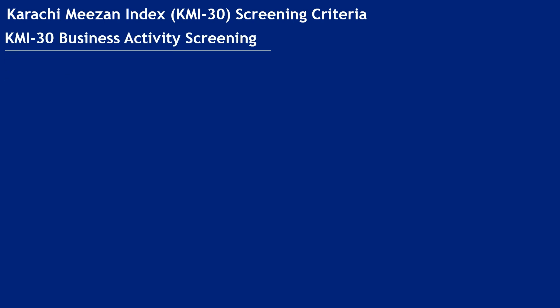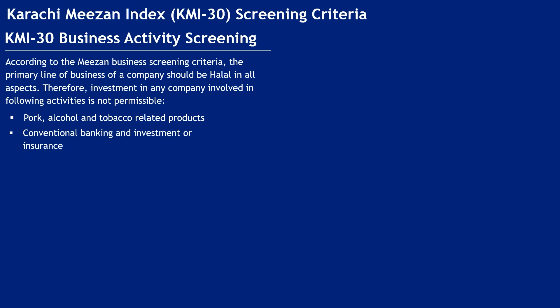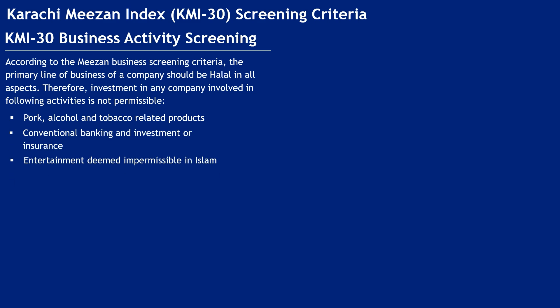Karachi Meezan Index (KMI-30) Screening Criteria — Business Activity Screening. According to the Meezan Business Screening Criteria, the primary line of business of a company should be halal in all aspects. Therefore, investment in any company involved in the following activities is not permissible: pork, alcohol and tobacco-related products; conventional banking, investment or insurance; entertainment deemed impermissible in Islam; and manufacturing of weapons.